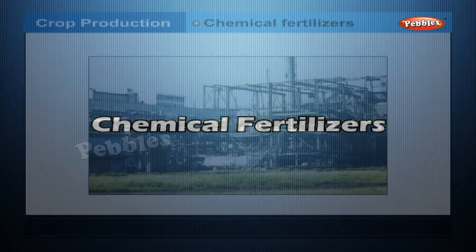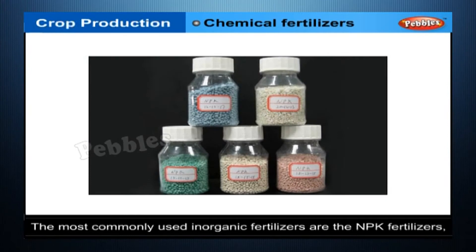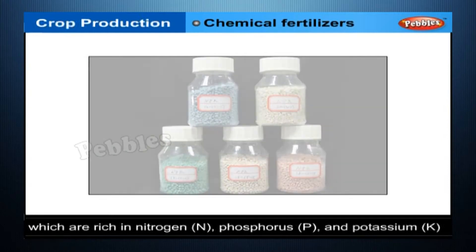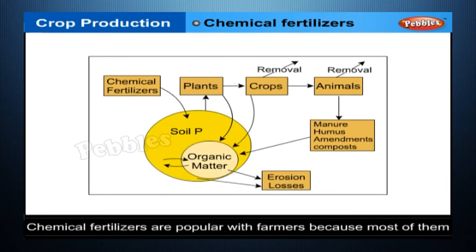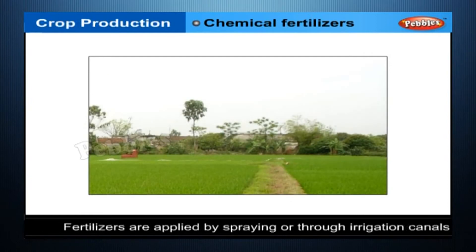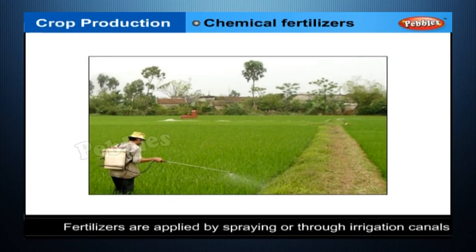Chemical Fertilizers: chemical fertilizers are manufactured in factories. The most commonly used inorganic fertilizers are the NPK fertilizers, which are rich in nitrogen (N), phosphorus (P) and potassium (K). Chemical fertilizers are popular with farmers because most of them are soluble in water and can be readily absorbed by plants. Fertilizers are usually applied either by spraying or through irrigation channels.